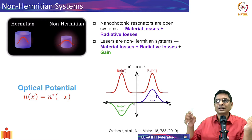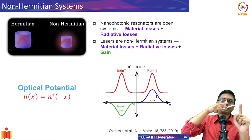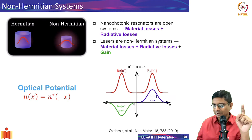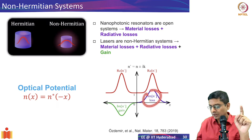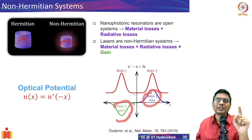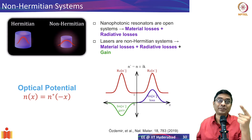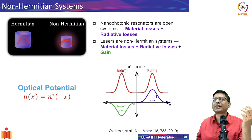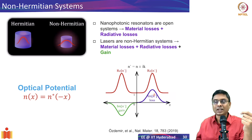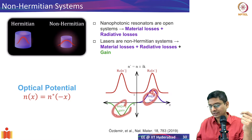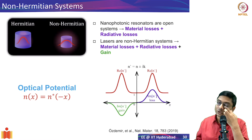Specifically, the real part of the refractive index should be an even function — mirror symmetry so that the positive and negative x-axis have the same value. The imaginary part, representing gain and loss, should be an odd function. For example, a refractive index of 3.4 + j means loss, while 3.4 − j means gain. So if you have loss on one side and gain on the other, you get a specific combination.